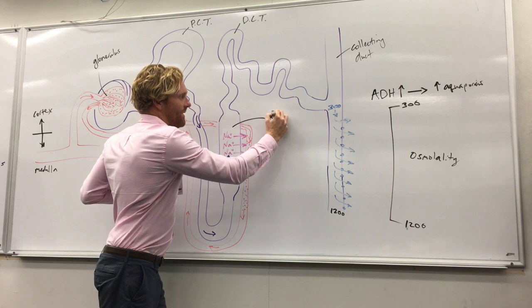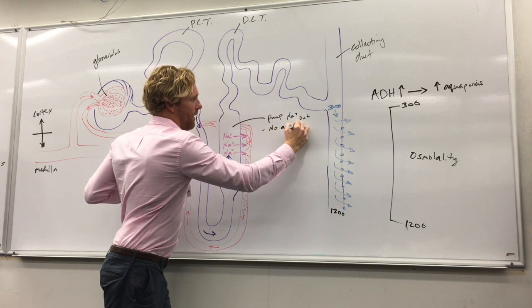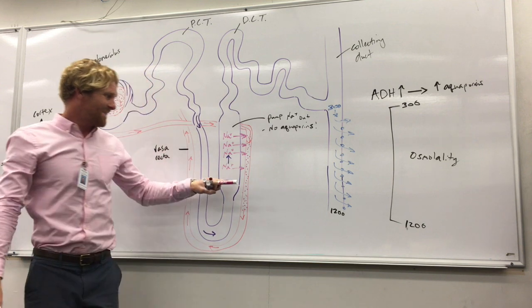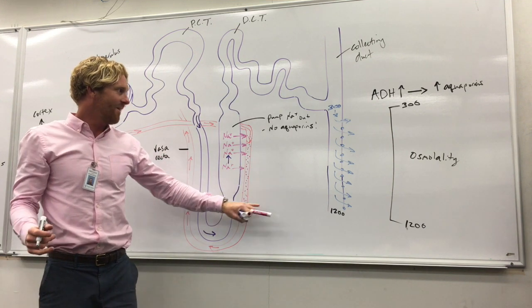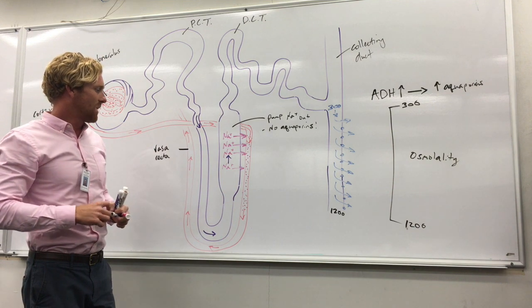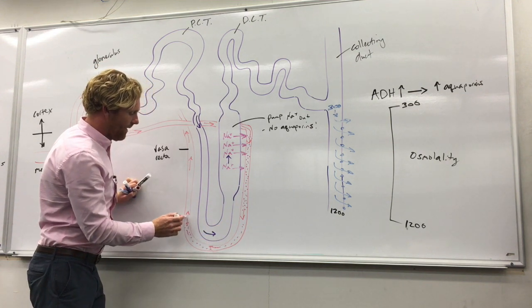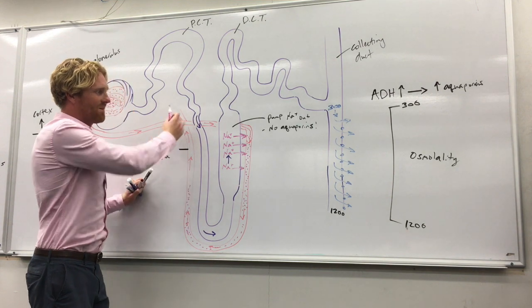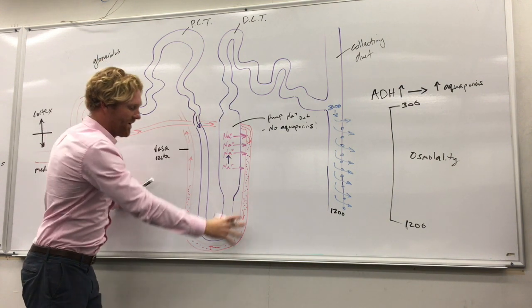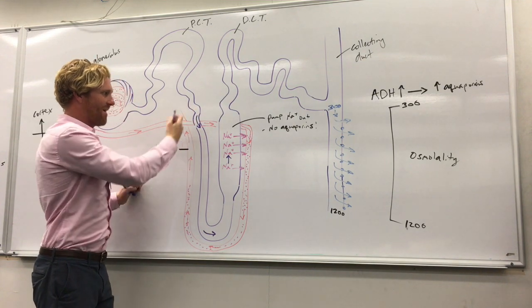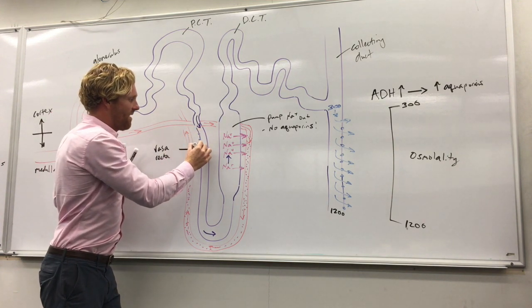Another critical feature of the ascending limb is that it has no aquaporins. This is important because if there were aquaporins, the water in the urine would simply follow the salt out and we wouldn't be able to build up saltiness down in the medulla. Meanwhile, in the descending limb there are a ton of aquaporins.